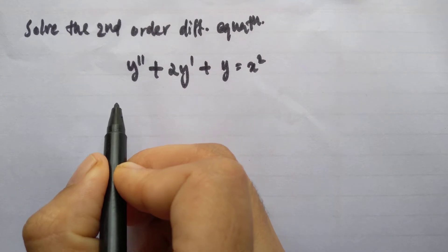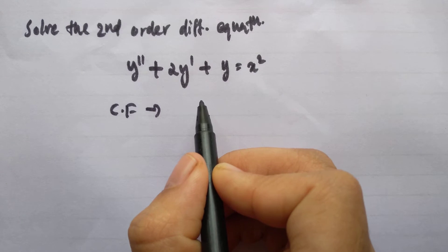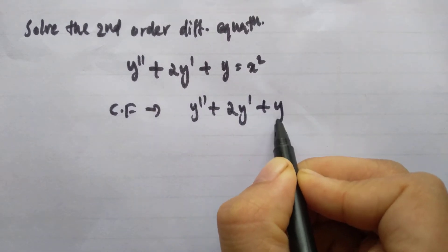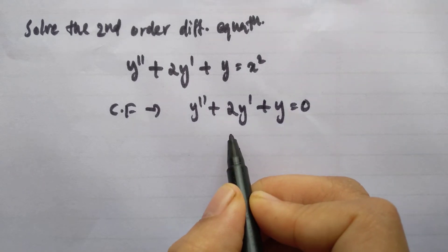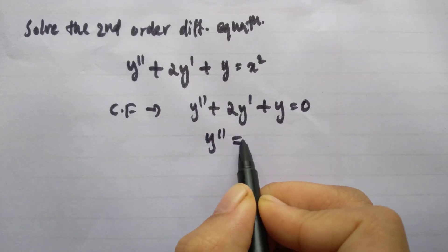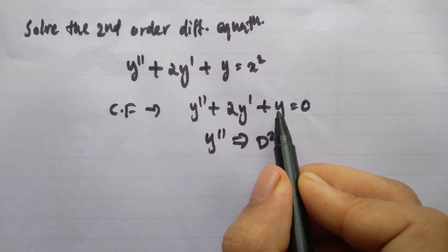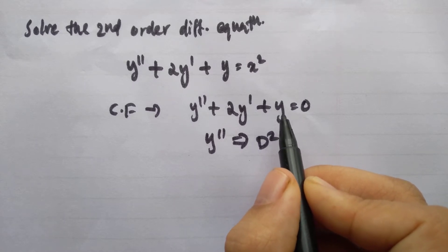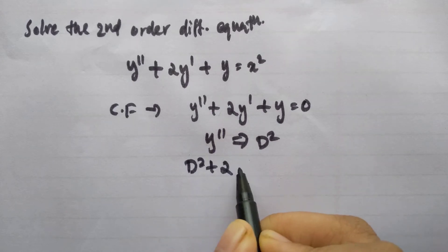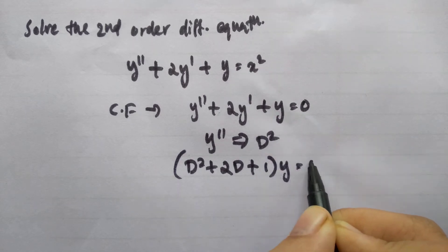To find the complementary function, we consider the homogeneous part of this equation: y double dash plus 2y dash plus y equals 0. Putting this in D-operator form, y double dash becomes D square, y dash becomes D, and the last term is D raise to 0. So we write this as D square plus 2D plus 1 into y equals 0.